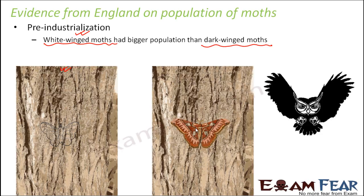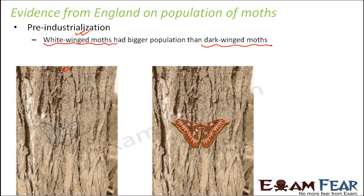Post-industrialization, the scenario became just the opposite — the population of dark-winged moths became larger compared to white-winged moths. The question was: how did industrialization affect the moth population? Pre-industrialization, there was not much pollution, and there was a white growth of lichens all over the tree trunks. Lichen is the mutualistic or symbiotic association between fungi and algae.